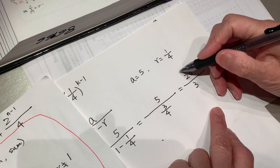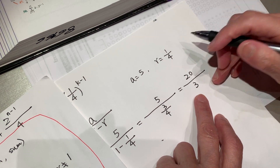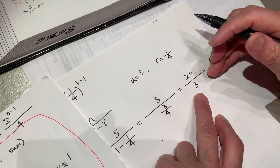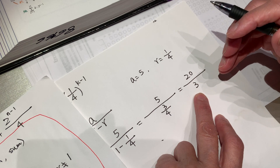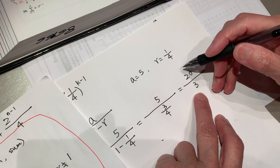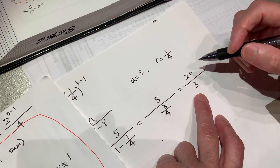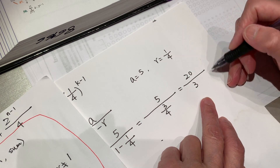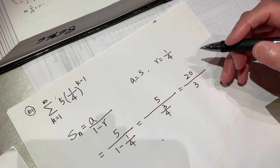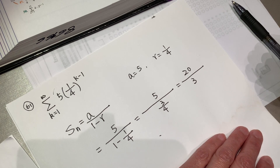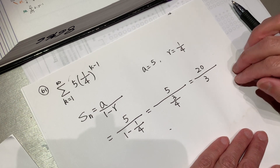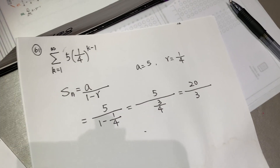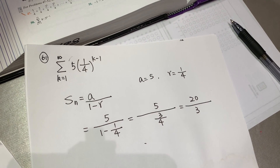S equals a over 1 minus r. So that's 5 over 1 minus 1 over 4, which equals 5 over 3 over 4 — equal to 20 over 3. If you are in first or second grade you might want to transfer it into a decimal or mixed number fraction, but as you go to high school, this is a perfect, good expression. So 20 over 3 is the result of this calculation. Thank you very, very much. You have a good evening. Bye-bye, friends.